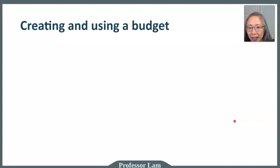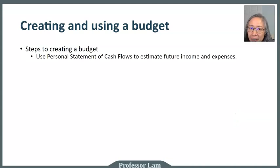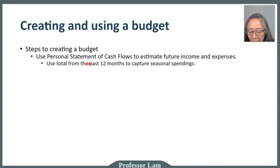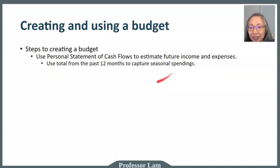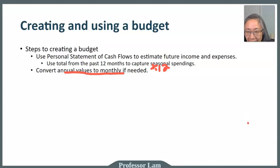So now let's get to it. How do you go about creating a budget? The good news is you already did a lot of the legwork, because the first step in creating a budget is to have a statement of cash flow. We already did that in our last video. As a tip, it's better to use the total from the past 12 months so that you'll capture an entire year of spending, because we may spend more money during the holiday season and more during the summer months. Using a total from the entire year will capture all those month-to-month variations. Then we simply divide the total by 12, converting from an annual number to a monthly number.